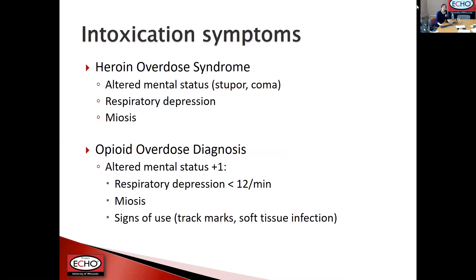Moving to intoxication symptoms, the biggest concern is overdose. The classic heroin overdose syndrome is a triad of altered mental status, respiratory depression, and miosis or pupillary constriction. But you don't need all three to diagnose opioid overdose — you just need altered mental status and then either respiratory depression, miosis, or circumstantial signs of drug use like track marks or soft tissue infection.